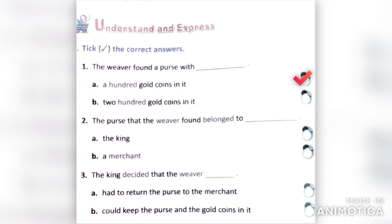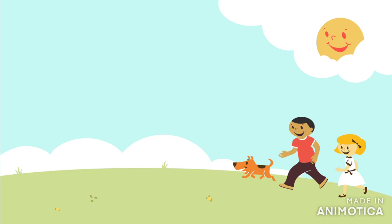Next one: the purse that the weaver found belonged to — we will tick the second option: the merchant. Then the third one: the king decided that the weaver had to return the purse to the merchant, or could keep the purse and gold coins in it. Again the second option: could keep the purse and the gold coins in it.